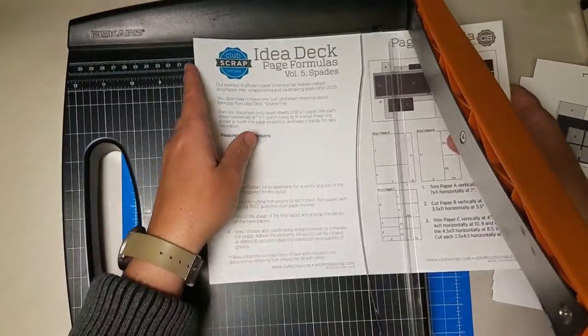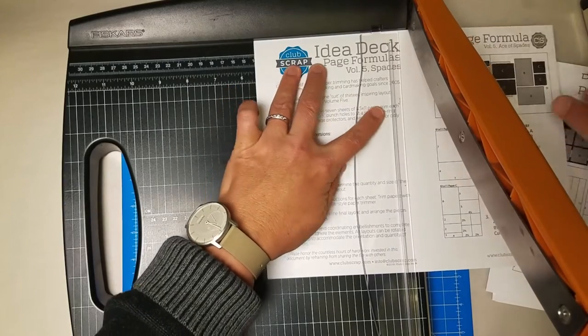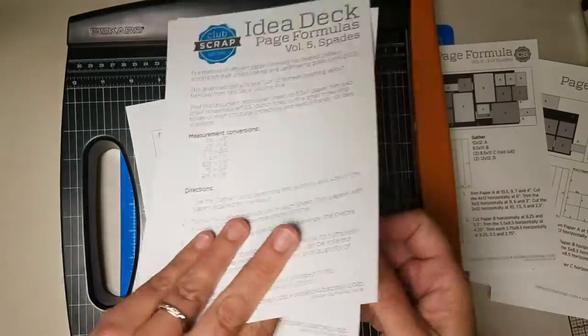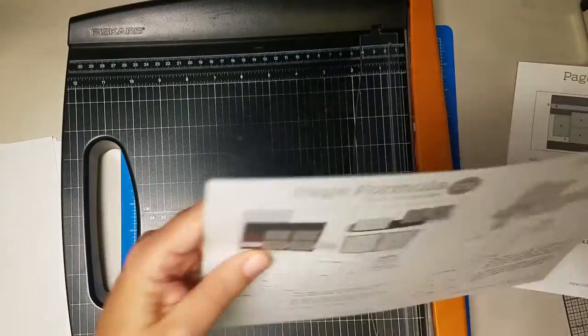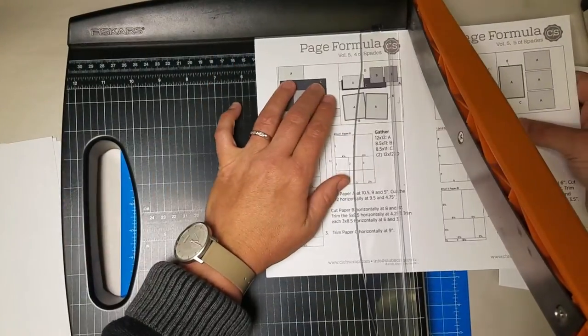So we'll take two sheets at a time. I've printed this also onto that beautiful white cardstock. So this is the cover page, then the ace, the two, the three. Then I'll grab two more sheets and cut them in half at five and a half inches in my trimmer.